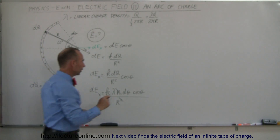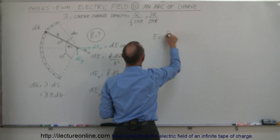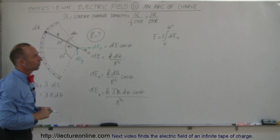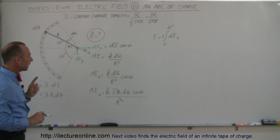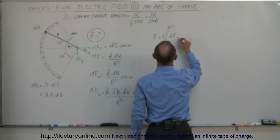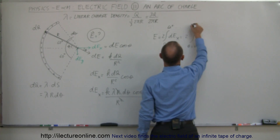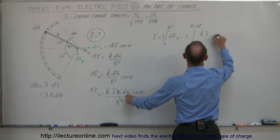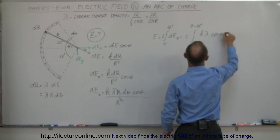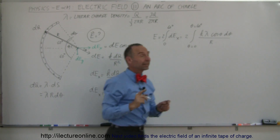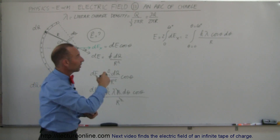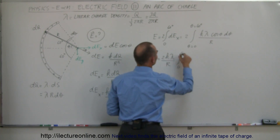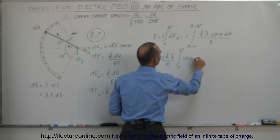To find the total electric field E, we sum up all the little DEx's. Using symmetry, it equals 2 times the integral from theta equals 0 to theta equals 60 degrees of K times lambda times cosine of theta times D theta, all divided by R. Since R, K, and lambda are all constants, they come out of the integral, giving E equals 2K lambda divided by R times the integral from 0 to 60 degrees of cosine of theta D theta.